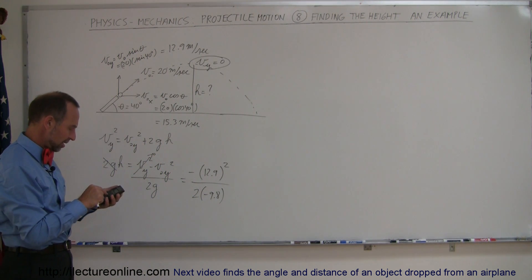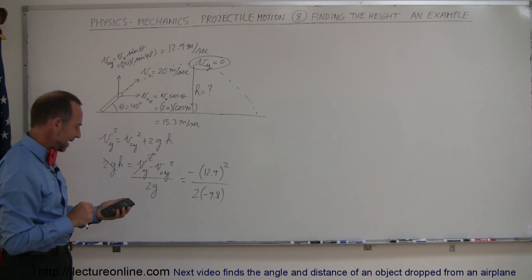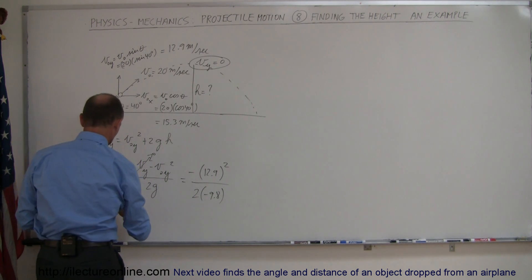So let's square this, divide by 2, divide by 9.8 and we get 8.4 meters, so h equals 8.4 meters. Final answer.